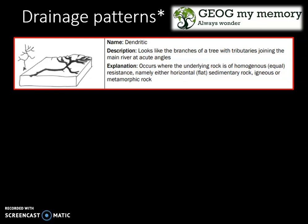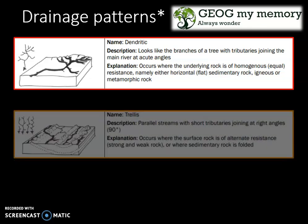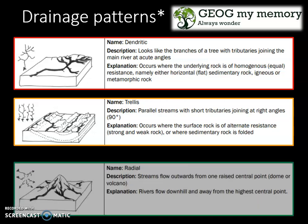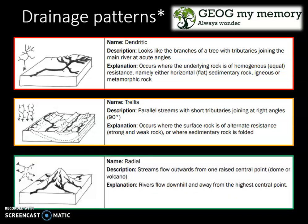The next example is the trellis drainage pattern. Here you have parallel streams with short tributaries joining at right angles. It occurs where the surface rock is of alternate resistance — so you have strong and weak rock — or it occurs where sedimentary rock is folded.